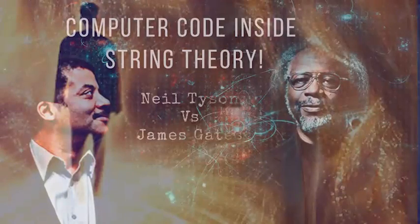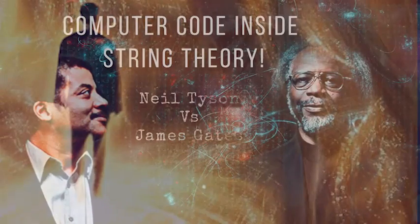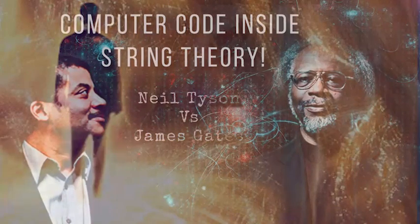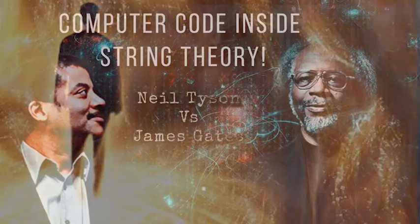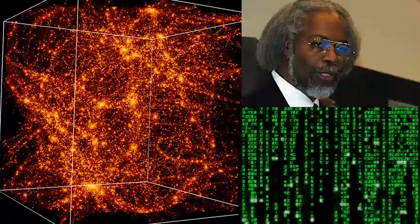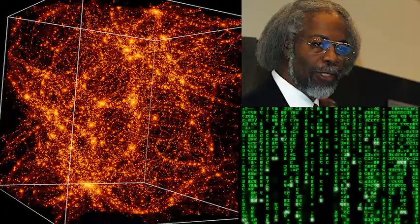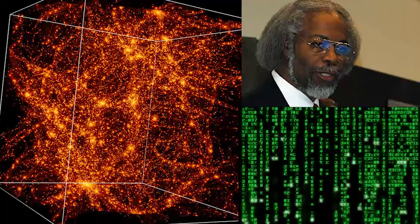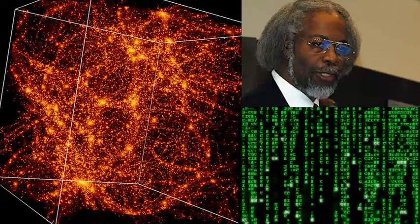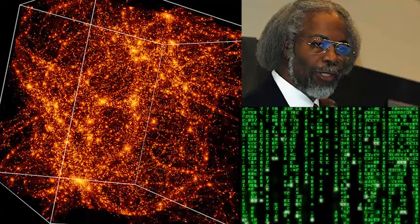When you then try to understand these pictures, you find out that buried in them are computer codes just like the type that you find in a browser when you go surf the web. You're saying your attempt to understand the fundamental operations of nature leads you to a set of equations that are indistinguishable from the equations that drive search engines and browsers on our computers. That is correct. So... Wait, wait. I'm still... I have to just be silent for a minute here. So you're saying, as you dig deeper, you find computer code writ in the fabric of the cosmos? Into the equations that we want to use to describe the cosmos, yes.